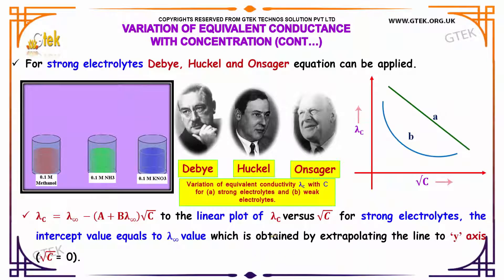For strong electrolytes, Debye, Huckel and Onsager equation can be applied. Lambda c equals lambda infinity minus A plus B lambda infinity multiplied by root c. To the linear plot of lambda c versus root c for strong electrolytes, the intercept value equals to lambda infinity value which is obtained by extrapolating the line to y axis, that is root c equals 0.